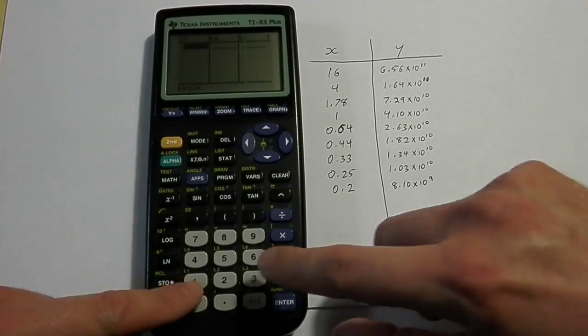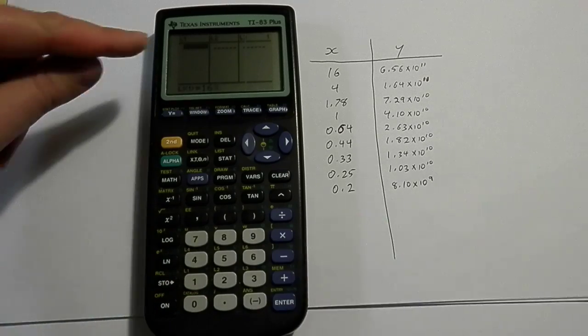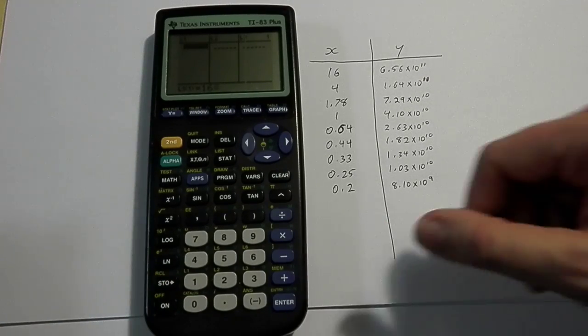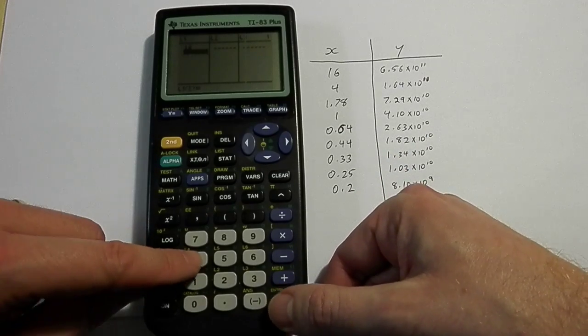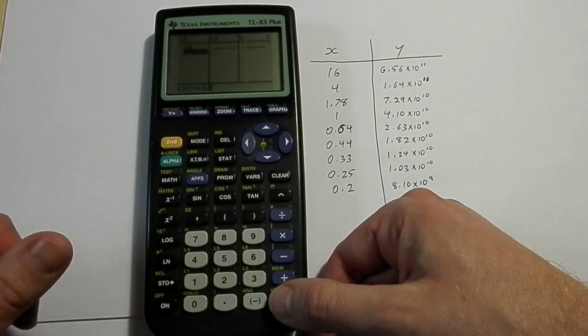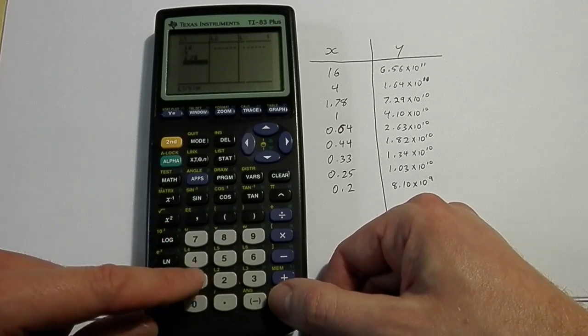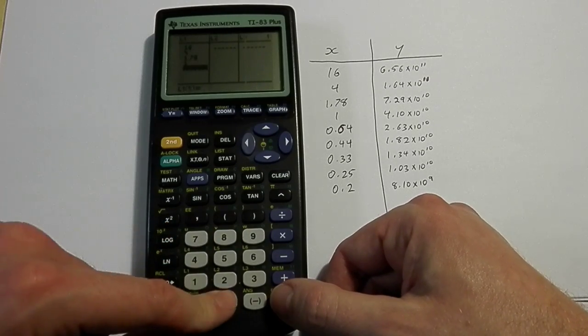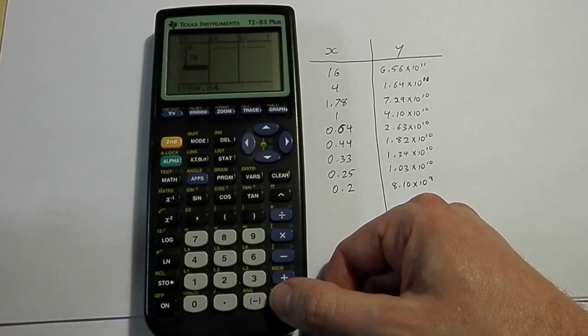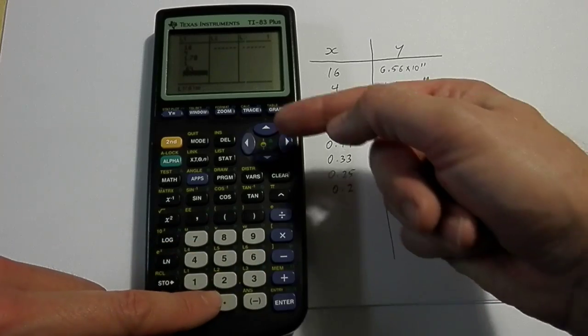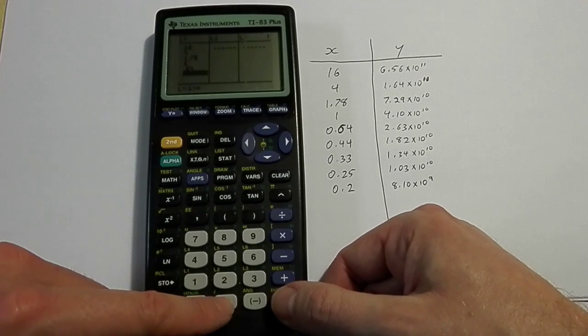So I'm just going to have to spend a second here and start typing in the values. It's already highlighted in the first part there of L1, so I type in 16, my first value, hit enter, 4, 1.78. After I'm entering in each number, all I'm doing is hitting the enter key to go down. If I made a mistake, I can always use the arrow buttons to go back up and fix a number.